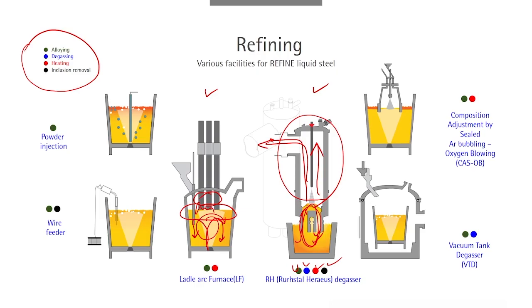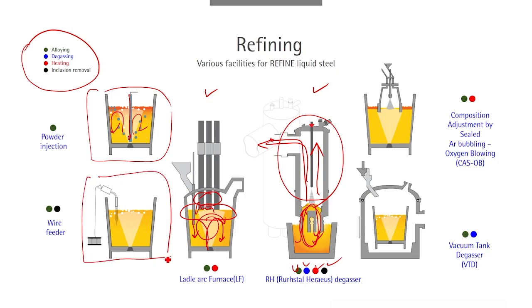Another type of facility is called powder injection. A lance is put inside liquid steel, and since it has many holes, argon gas and flux are added through the holes into liquid steel for agitation. There is also a wire feeder, where certain alloying elements or flux are provided through wire injection and delivered into the middle or bottom of liquid steel, then mixed by argon gas.